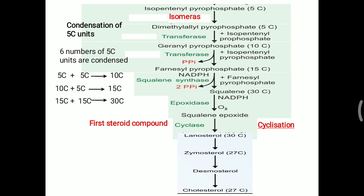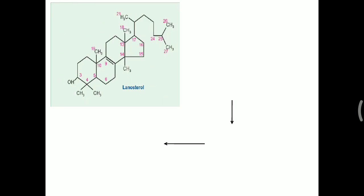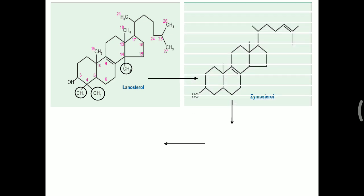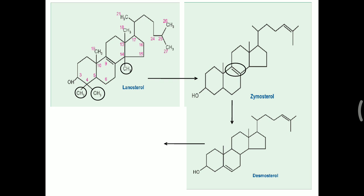Lanosterol is further converted to zymosterol and then desmosterol, and finally to cholesterol. Lanosterol contains 30 carbons — the 27-carbon cholesterol skeleton is present, but additional methyl groups are attached at C4 and C14. These methyl groups are removed, converting lanosterol to zymosterol. In zymosterol, a double bond between C8 and C9 is shifted to C5 and C6, leading to the formation of desmosterol.